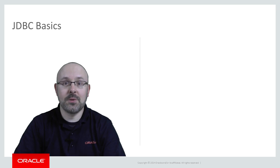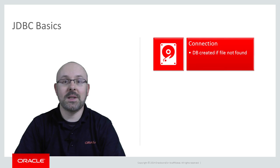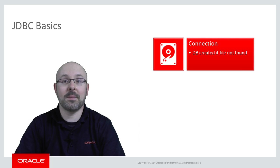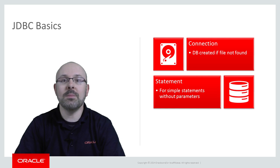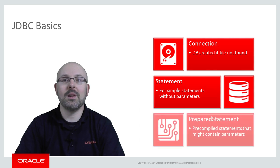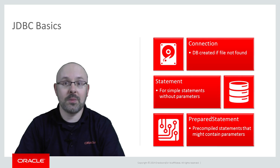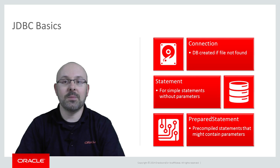There are three basic concepts you should know about JDBC. First, the connection. In client-server databases such as Oracle, the connection is made over the network. In the case of MAF, the connection is made by opening the relevant SQLite database file. If the file doesn't exist, the SQLite JDBC driver will create it. The second concept is the statement, used to execute simple statements that don't require parameters. And finally, we have the prepared statement. A prepared statement is pre-compiled, which enhances performance. It might contain parameters and can be reused as needed. Statements and prepared statements are created by calling methods on a connection object.